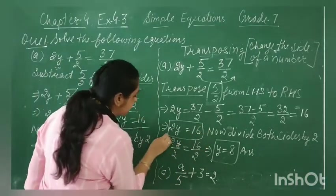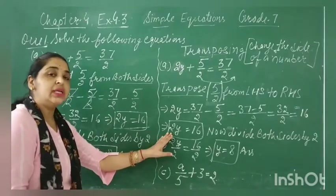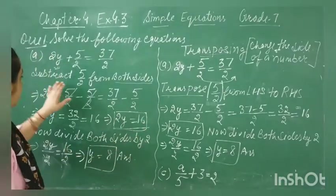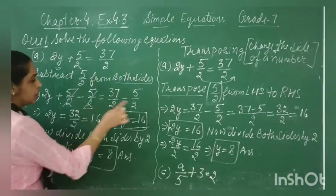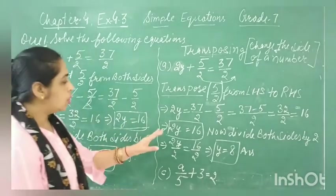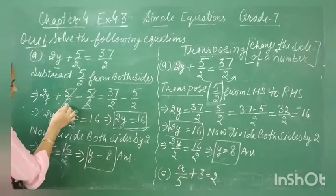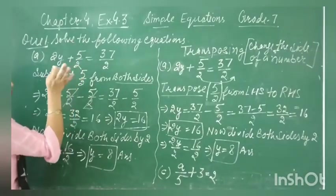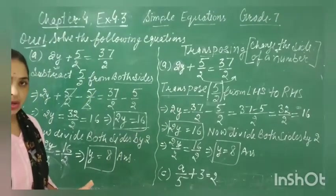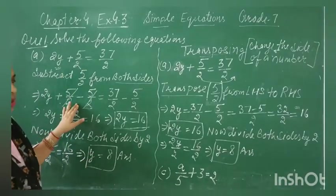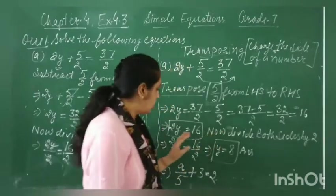The equation after the first step — after transposing — is the same as what we got with the first method. Both methods have the same goal: eliminate the constant. The basic difference is that in the first method we write 'subtract 5 by 2 from both sides,' whereas with transposing there is no need to write 5 by 2 again on the left; it directly transfers to the right hand side with a changed sign.